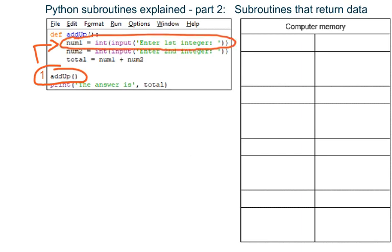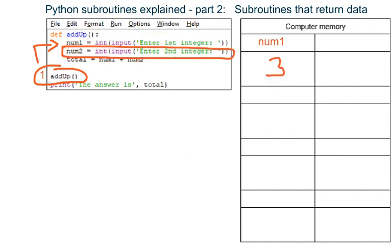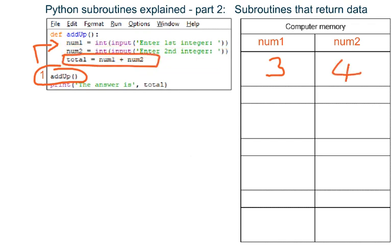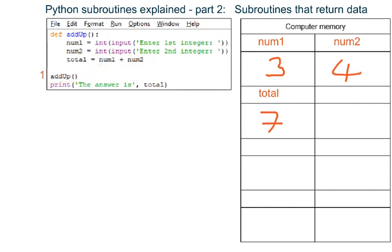It makes variable num1 and an integer is stored in it. It makes variable num2 and an integer is stored in it. It makes variable total and the result of adding up what is in num1 and num2 is stored in it. At this point, subroutine AddUp has finished, so the variables which were made inside the subroutine are destroyed.